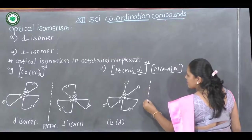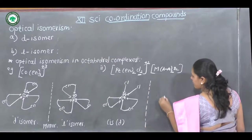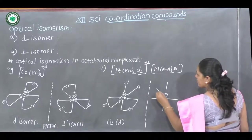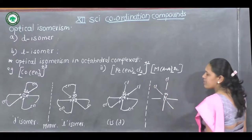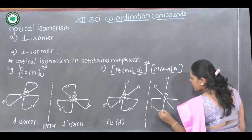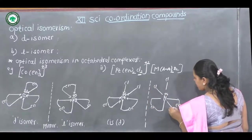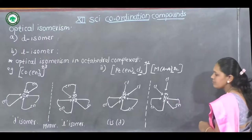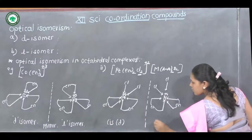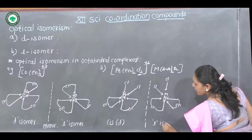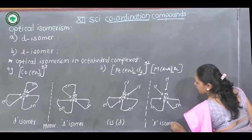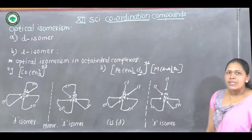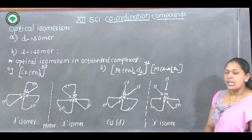The mirror image of the cis D-isomer has platinum(IV) with ethylenediamine ligands forming six coordinate bonds in the opposite arrangement. This mirror image is also a cis isomer but is the levorotatory L-isomer. These two are non-superimposable mirror images of each other — geometrical isomers that are also optical isomers (dextrorotatory and levorotatory).